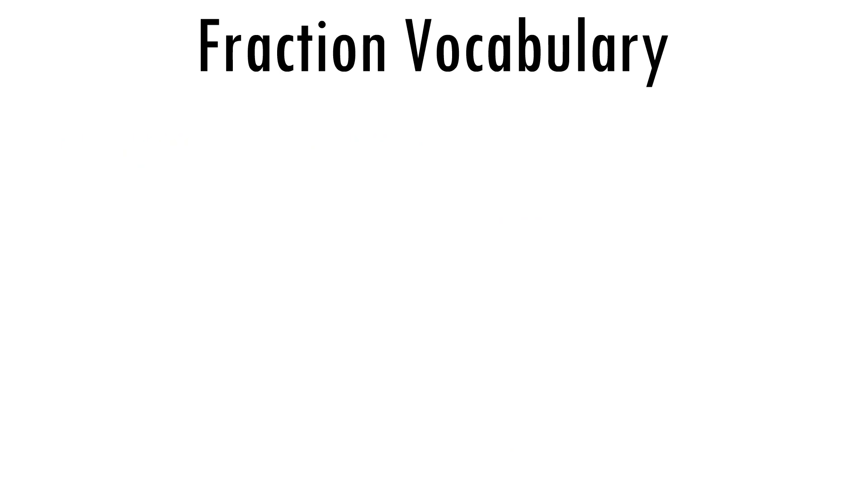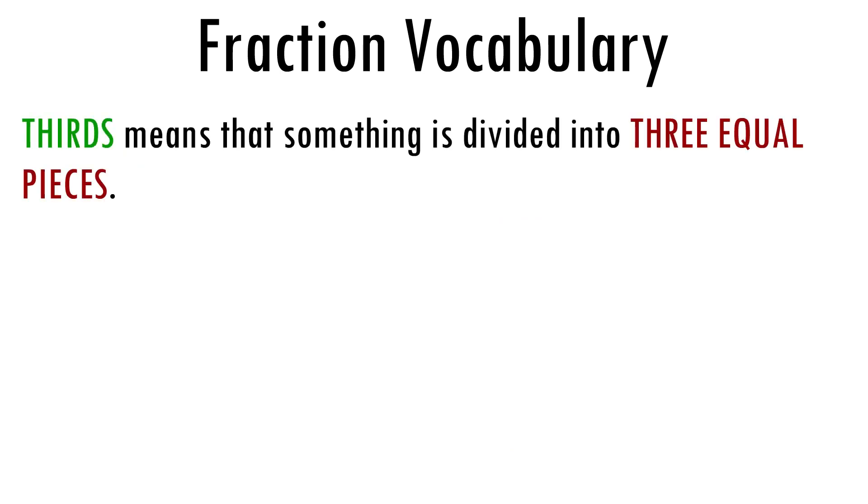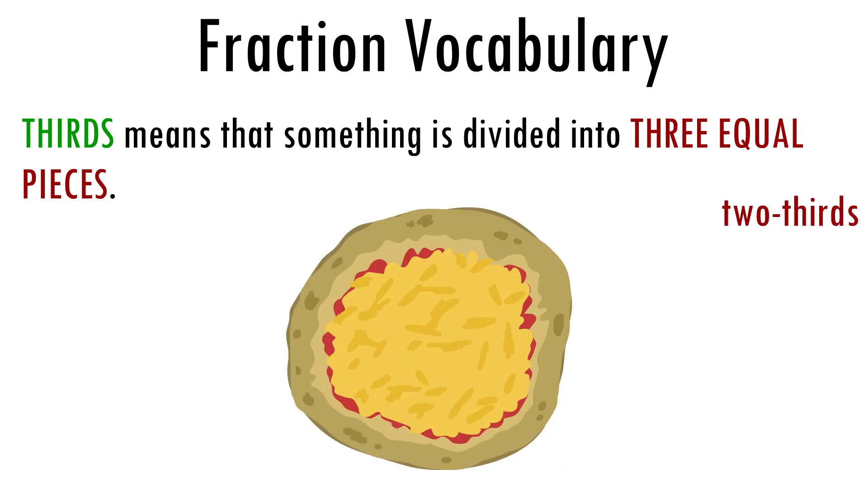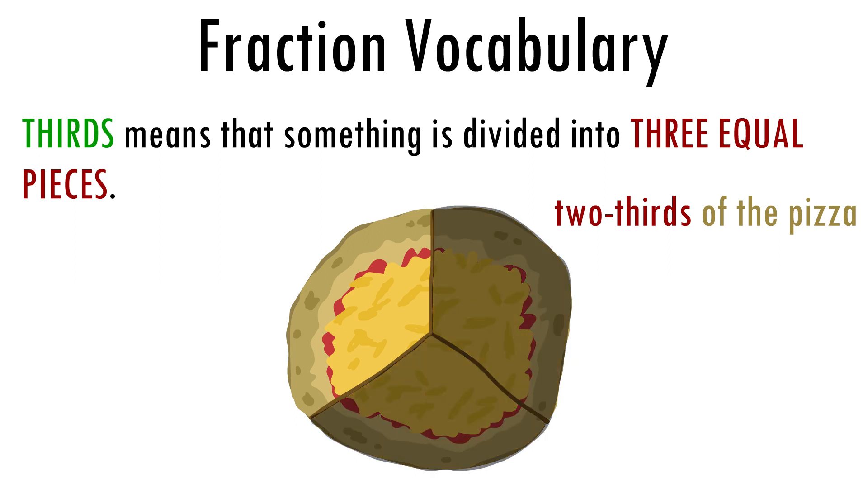We should also discuss thirds. The word thirds is used when we are talking about something that is split into three equal pieces. Say if I had a pizza and I wanted two-thirds of the pizza, I would have to cut the pizza into three equal pieces and take two of the pieces. Then, I would have two-thirds of the pizza.